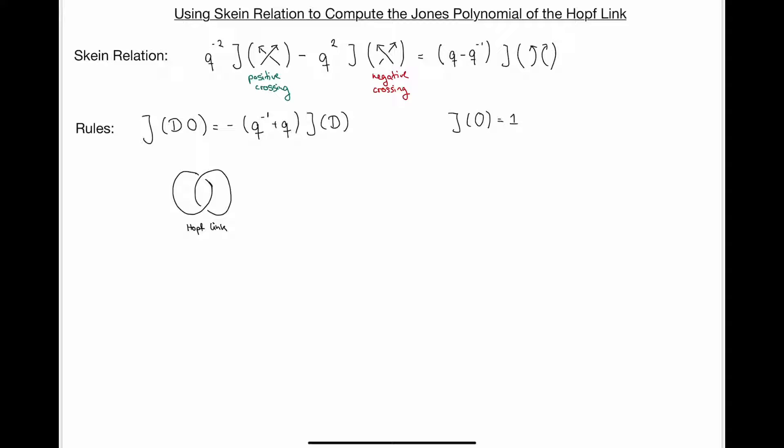We're going to have the following equality. If we take q to the minus 1 and the Jones polynomial of some positive crossing in a knot, then we take minus q squared, where now we take the Jones polynomial of the same knot where we replace this positive crossing by a negative crossing. And this should be equal to q minus q inverse of the Jones polynomial, where I untie the crossing in this way.